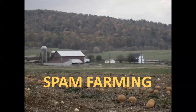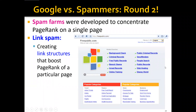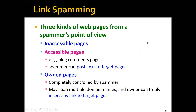Previously we said that the shirt seller can create 1000 pages to link to his page and boost the page rank score. This is actually a very commonly used technique by spammers called spam farming. So in Google versus spammer round two, spam farms were developed to concentrate page rank on a single page by creating link structures that boost the page rank of one particular page. From a spammer's point of view, there are three kinds of web pages.